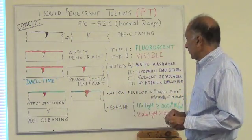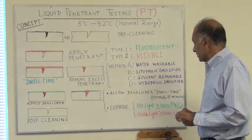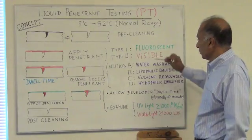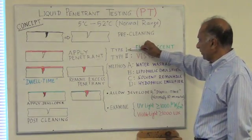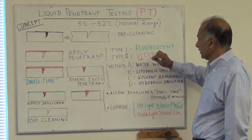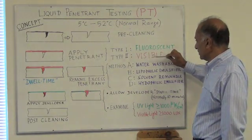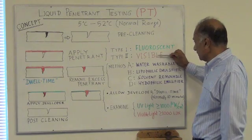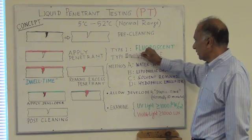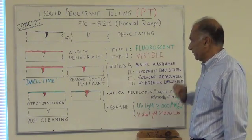The penetrants which are fluorescent are called Type 1 penetrants. The penetrants which are visible are called Type 2 penetrants.